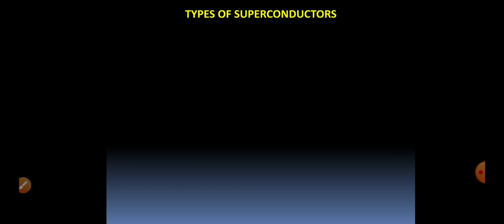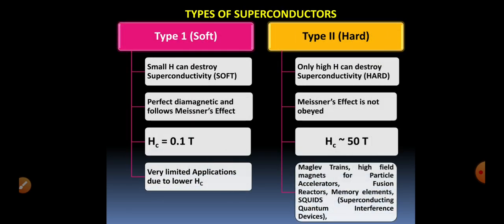There are two types of superconductors. Type 1 superconductors are called soft superconductors because only a small magnetic field can destroy their superconductivity. Type 1 superconductors are perfect diamagnetic substances — that is, they follow the Meissner effect. Their critical magnetic field is very low, at about 0.1 Tesla. Due to this, Type 1 superconductors have very limited applications.